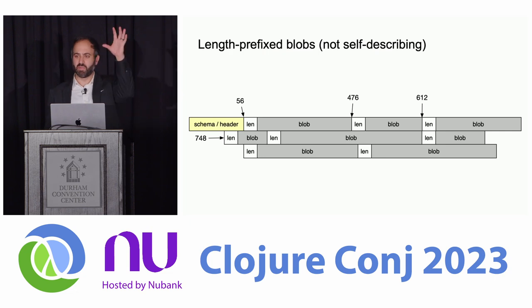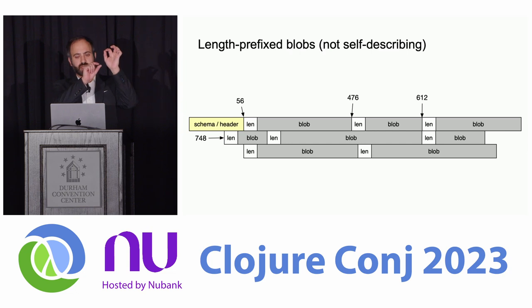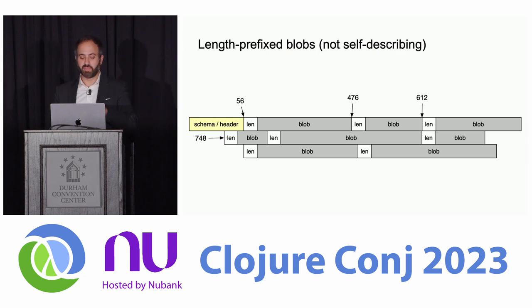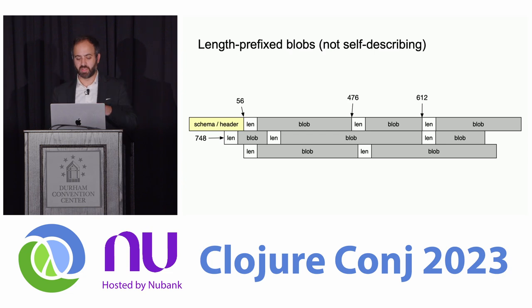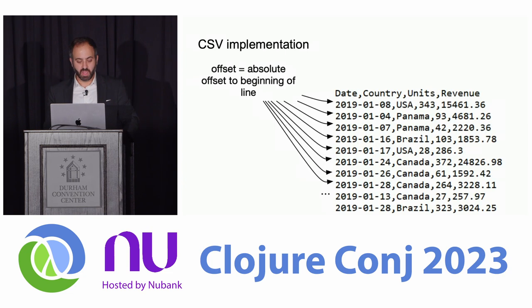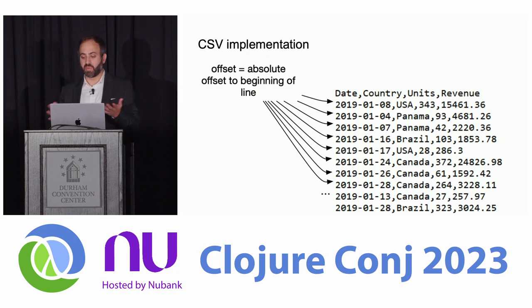Your blobs might not be self-describing — you might have a schema or some header that informs how to decode the blob. Avro actually works like this. Avro has the schema up top and then each record is just the values without keys. You need to understand the schema to decode the blobs. But Avro is not random access because it has internal compressed blocks, and none of the APIs support random access. Surprisingly, CSVs are directly usable as this dataset abstraction, and our tool has an implementation that allows for indexing CSVs directly.